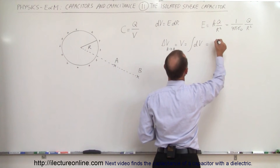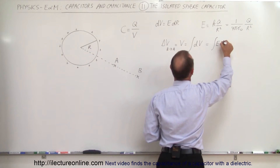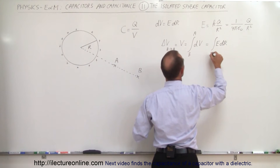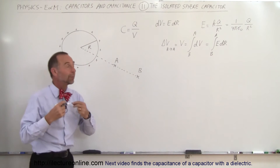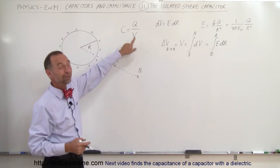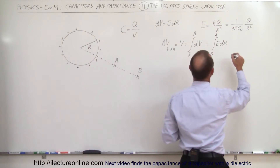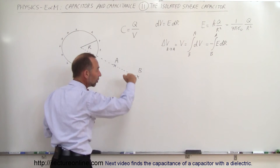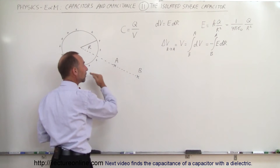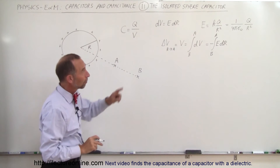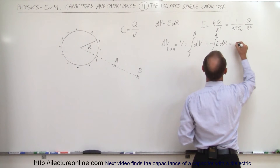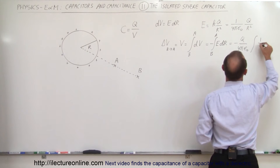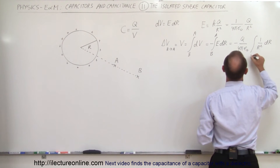So dV becomes the integral of E dr, going from B to A. We plug in what E equals, and we do need a negative sign — as R gets bigger the potential gets smaller, and as R gets smaller the potential gets bigger, so we need the negative sign to compensate. Moving the constants out, this equals minus Q over 4πε₀ times the integral of 1 over r squared dr, going from B to A.